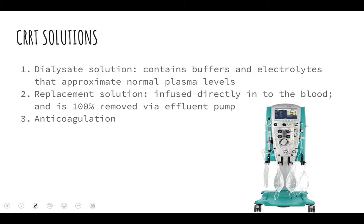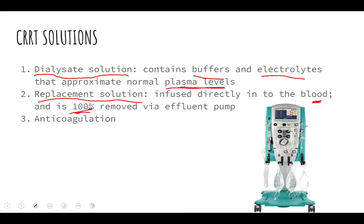Let's look at some of the solutions used in the CRRT machine. The dialysate solution contains electrolytes and buffers, and by the end of CRRT, our goal is to match the plasma levels to the dialysate solution. Then we have the replacement solution — this is infused before and after the blood passes through the filter, goes directly into the blood, and is completely removed at the end by the effluent pump.